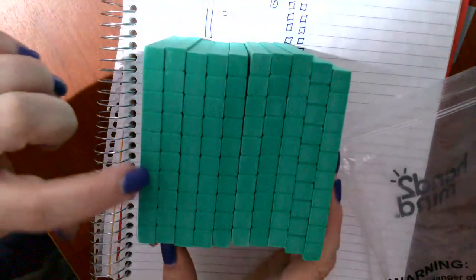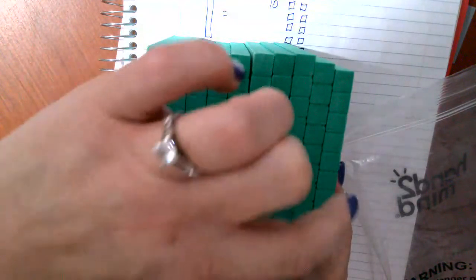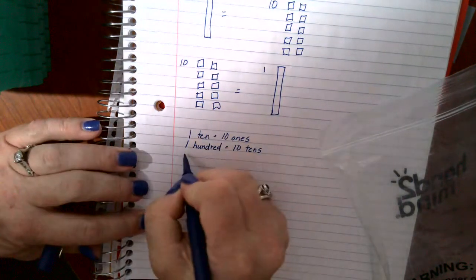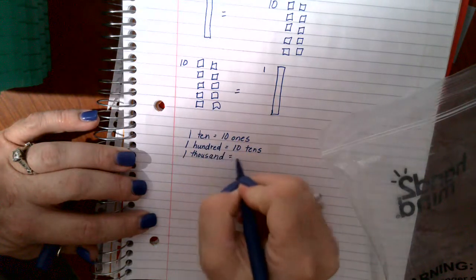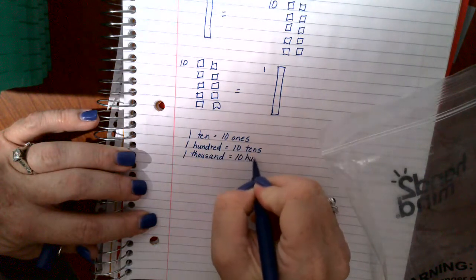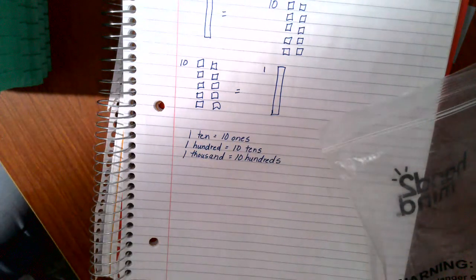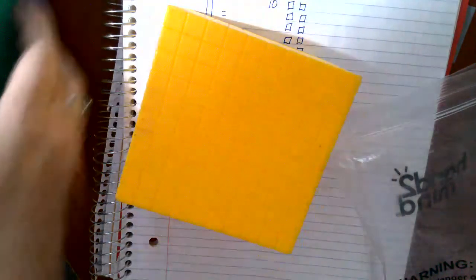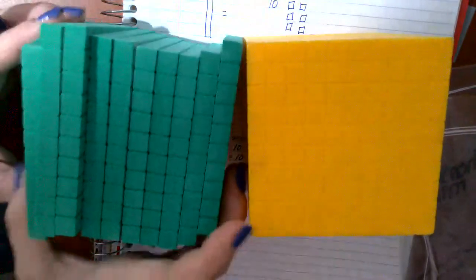So, let's count them. One hundred, two hundred, three hundred, four hundred, five hundred, six hundred, seven hundred, eight hundred, nine hundred, one thousand. So, one thousand is the same as ten hundreds. One thousand is the same as ten hundreds. So, here's a thousand, and here is ten hundreds. Do you see that they're the same? All right.